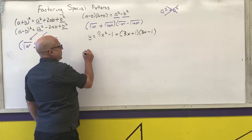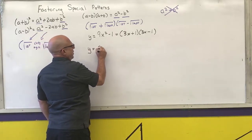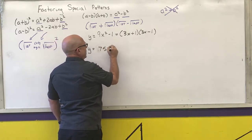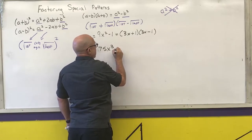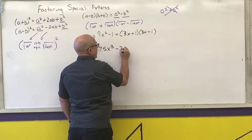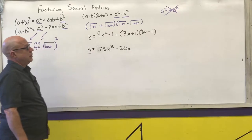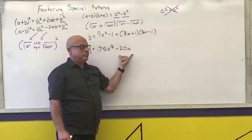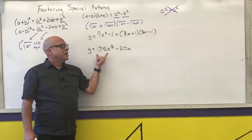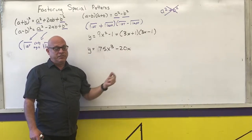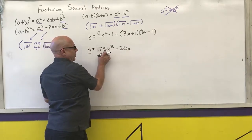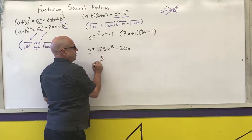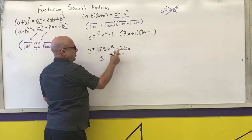Another example: y equals 75x cubed minus 20x. You may say there's no perfect square here — that's a cube. But I do have a common factor in both of these. 5 goes into both 20 and 75, and the lowest power of x that appears in both terms is x to the first. I can factor out 5x and then do division.